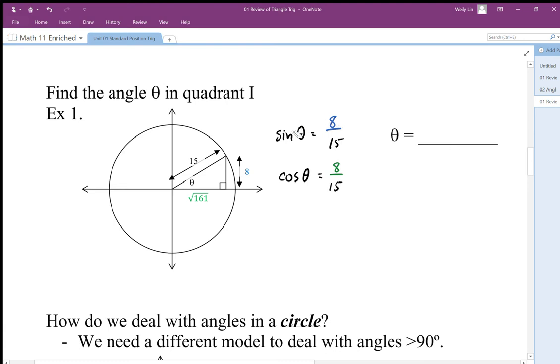We can use either one of these. Since we're starting with the ratio, we can undo the sine or use arc sine to figure out theta. Same thing with cosine, we can use arc cosine. I'm going to use tangent, so I'm going to start with the slope of 8 over square root 161.